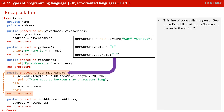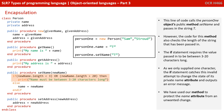Now, this line of code — person1.setName(T) — calls the person1 object's public method setName and passes in the string T. However, you can see the code for this method also checks the length of the string that's been passed in. The if statement requires the value passed in to be between 3 to 20 characters long. As we only supplied one character, the uppercase T, the if statement catches this invalid attempt to change the state of its private name attribute and outputs a friendly error message. We've used our method to protect the name attribute from an unwanted change.